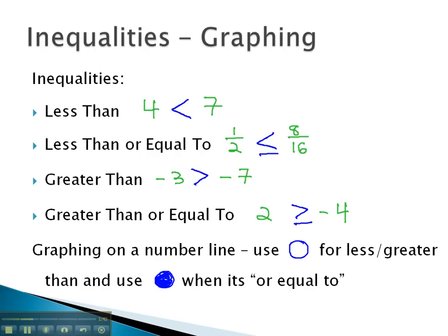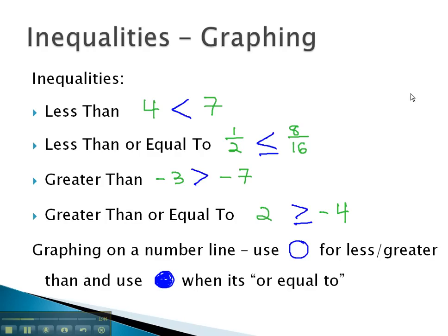Let's take a look at an example where we can see this work out. Here, we are going to graph the inequality x is greater than or equal to negative 3. Focusing on negative 3 for a moment, the inequality says we can be equal to that value. For this reason, we will use a closed circle on negative 3.